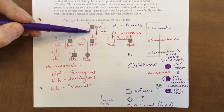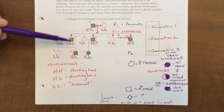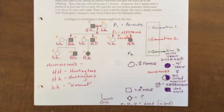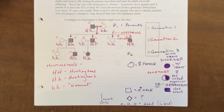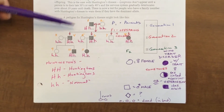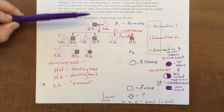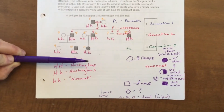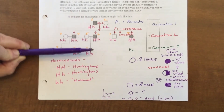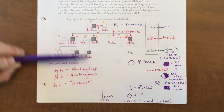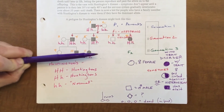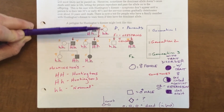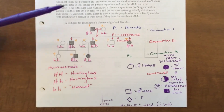Dad gives the little h gene, so all the shaded children have to be big H little h — they can't be big H big H because mom has no big H to give. If you're not sure, do a quick Punnett square to see possible children. My advice: start with the first generation — that gives you the most information about the entire pedigree. I don't want to start at the bottom where I don't know who they're married to or what their siblings look like.